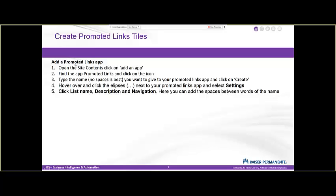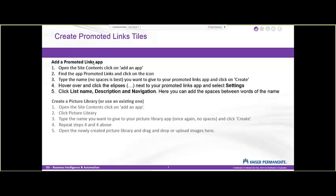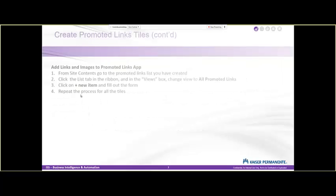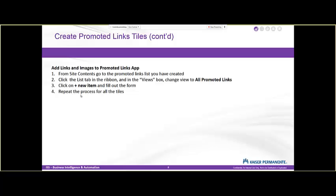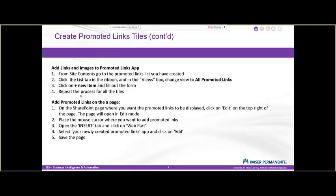The first grouping is we're going to add the promoted links app to the site by going through five steps. Then we're going to create a picture gallery, or use an existing one — for your site you'll be creating new ones. Next, we'll add links and images to the promoted links app. And finally, we will add the promoted links tiles to a page, going through those five steps as well.